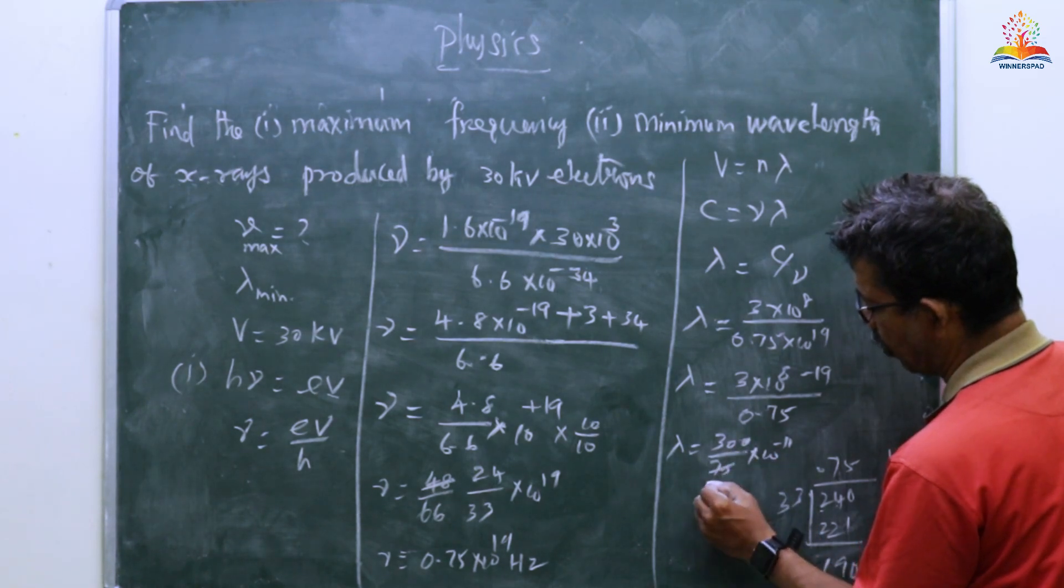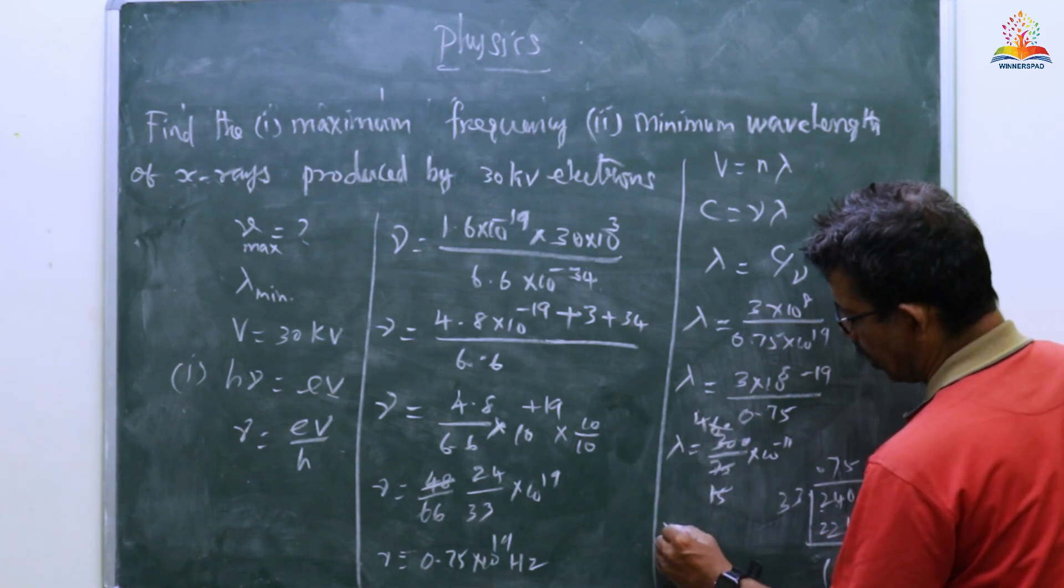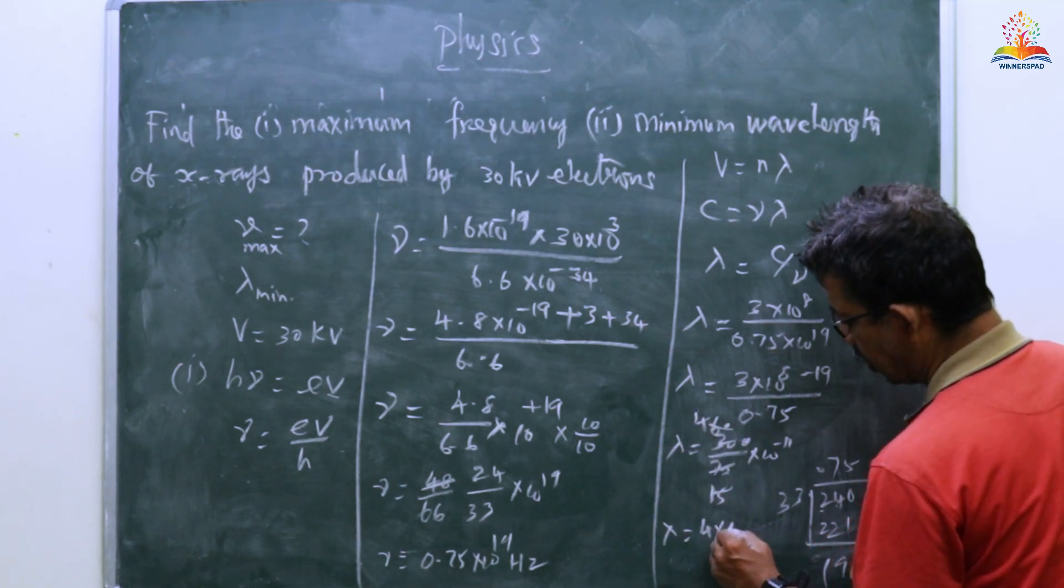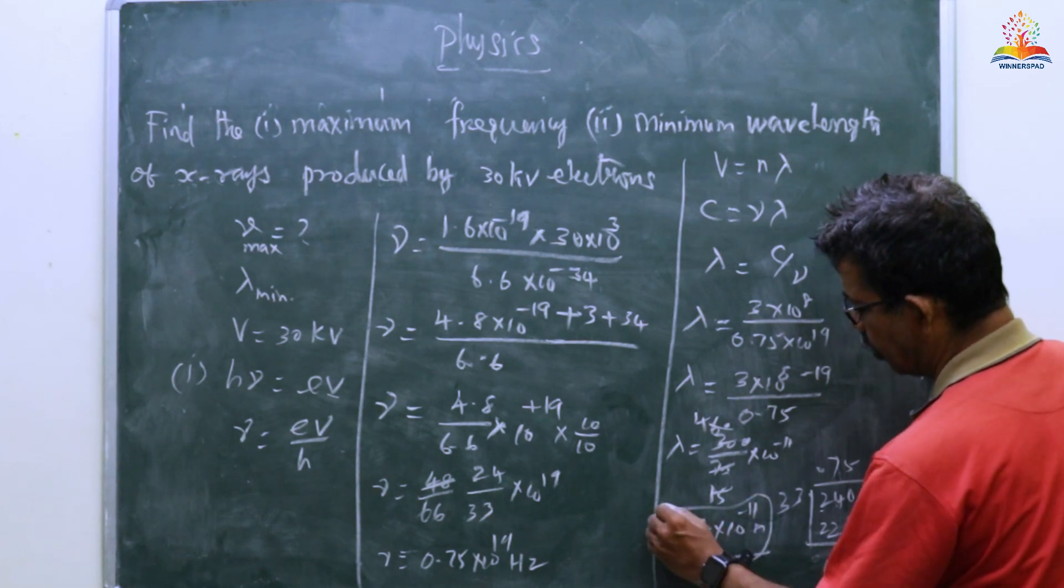Now λ equals 300 by 75 times 10 to the minus 11. 300 by 75 is 4. Then λ equals 4 times 10 to the minus 11 meters. This is the minimum wavelength.